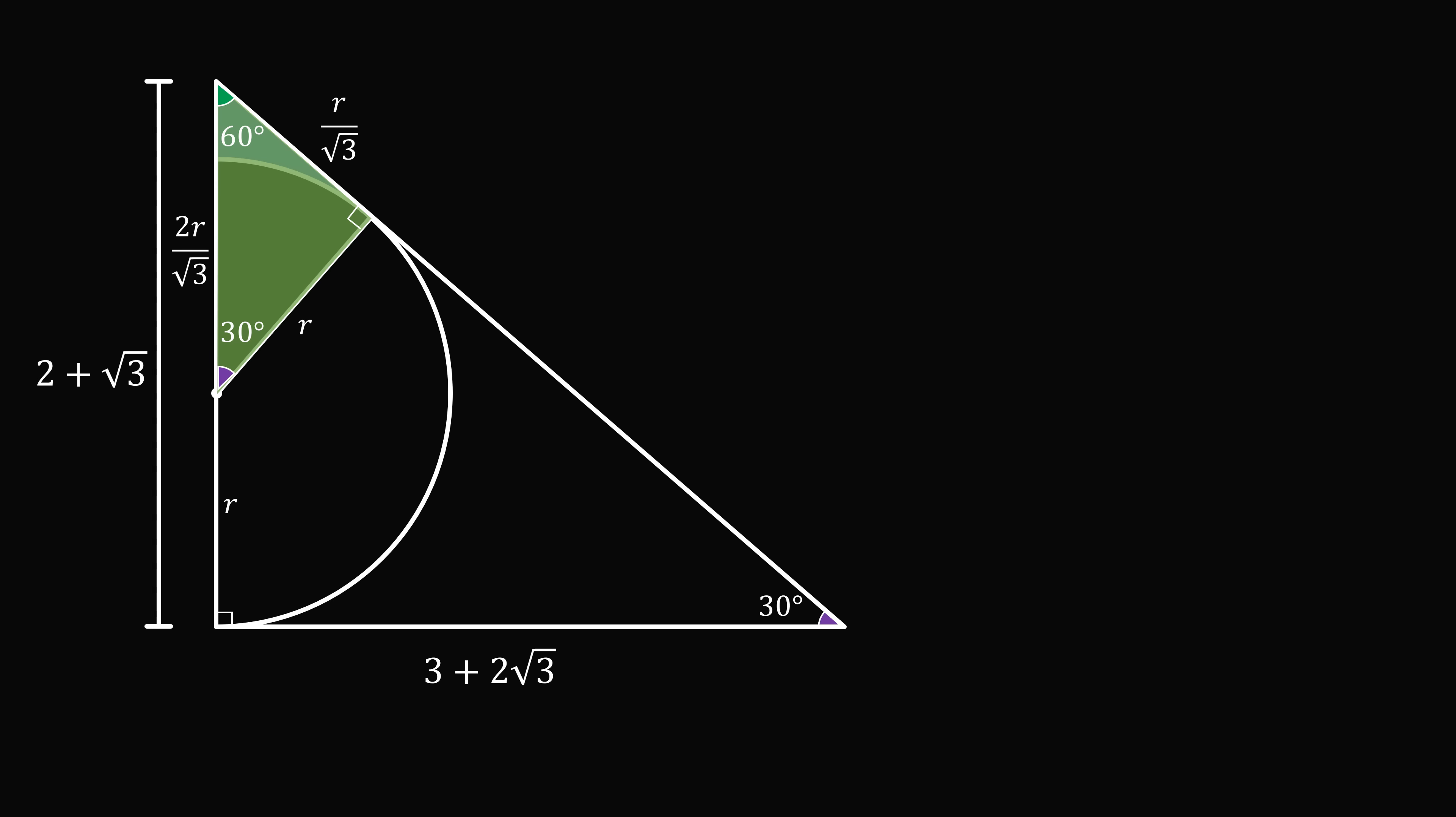So how can we solve for r? We know that this length is equal to 2r divided by root 3. But there's another way that we can express this length. We know the entire leg is equal to 2 plus root 3. But then if we subtract the radius, we will also get the same length. So this length is equal to 2 plus root 3 minus r. But it's also equal to 2r divided by root 3. So we have a linear equation in r. Let's solve this equation for r.